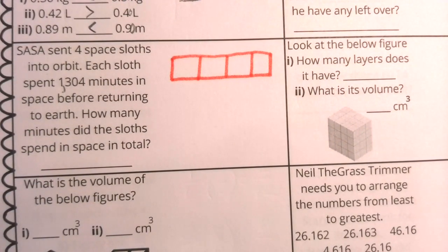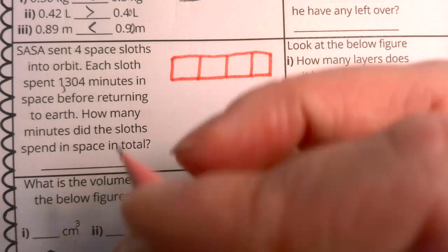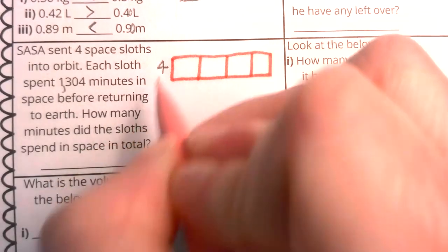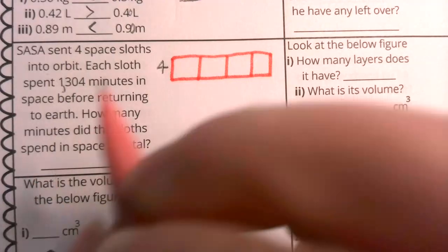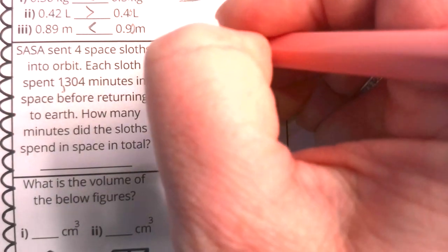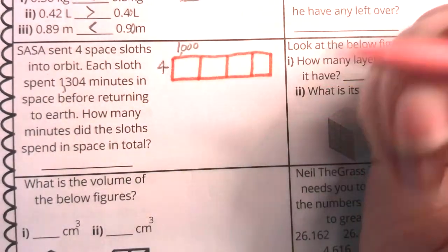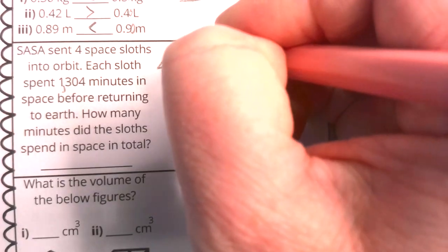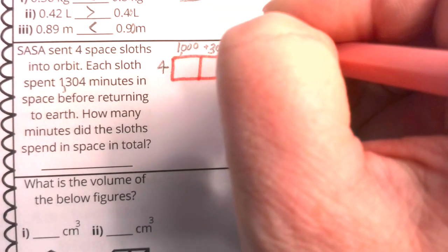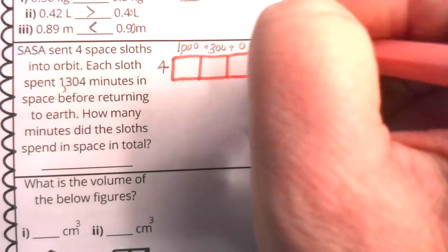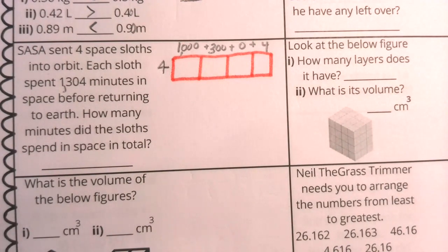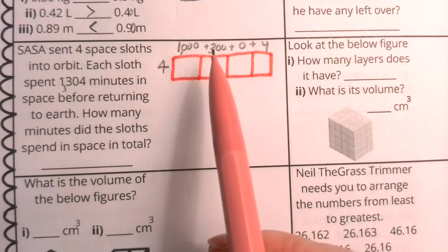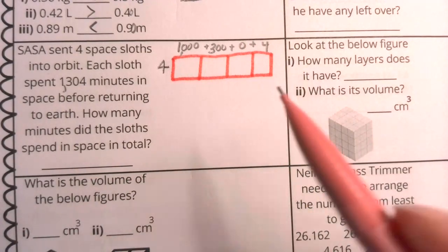You can use whatever strategy you learned in that math toolbox last year. I'm going to use the area model of multiplying. I'm going to remember that I'm multiplying 1,304, so I'm going to break that into its expanded form. Here I have 1,000 plus, here I have 300 plus, there's no groups of 10, but there are four groups of one. So I really have 1,304 broken into four columns.